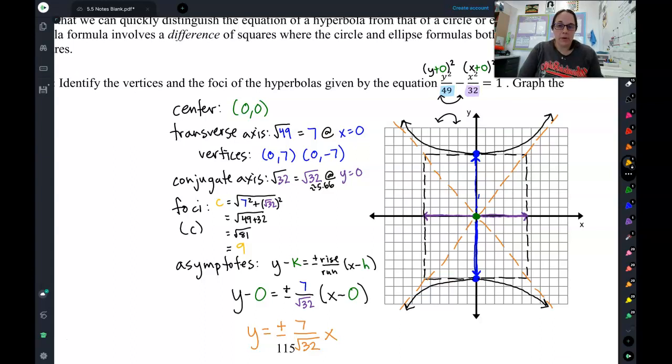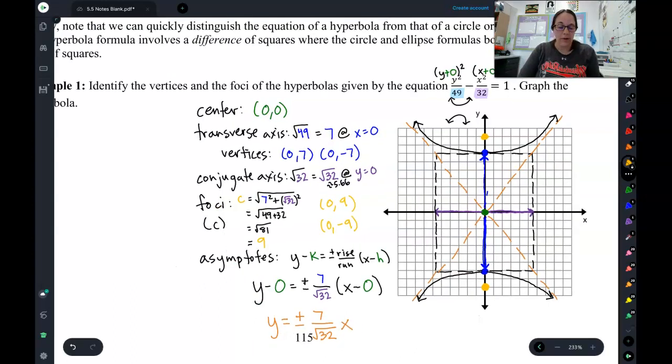Now remember, your foci need to go inside the branches. So in order for my foci to go inside the branches, I'm going to go up 9 and down 9. So up 9 here, down 9 there, and there's my foci point, so that's going to be 0, 9 and 0, negative 9. And we are finally done. We have graphed your very first hyperbola.